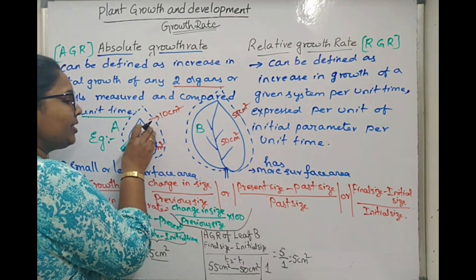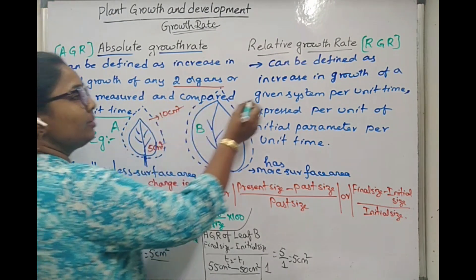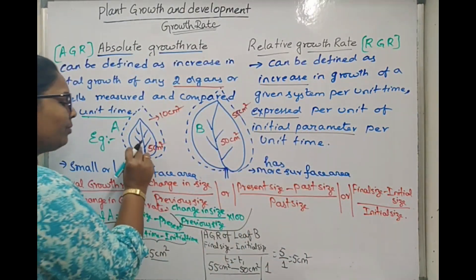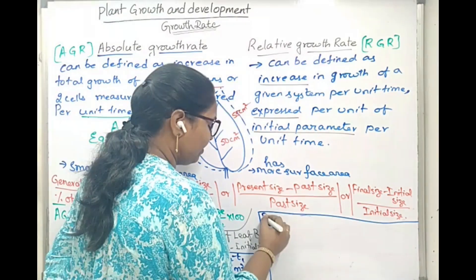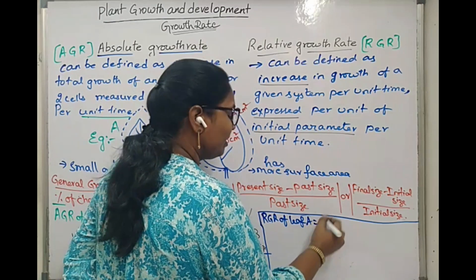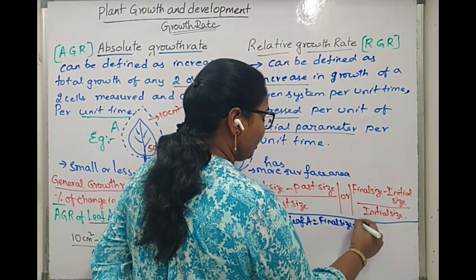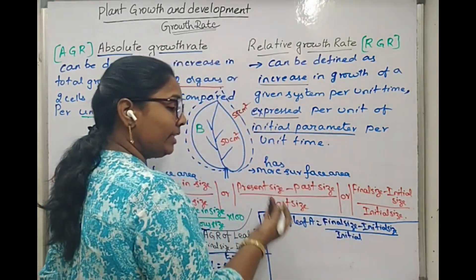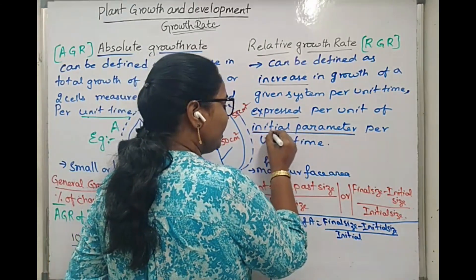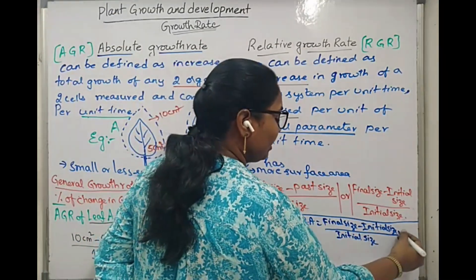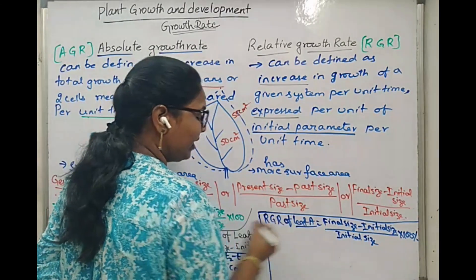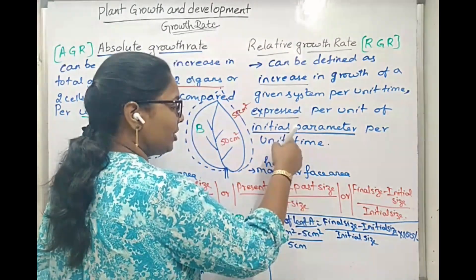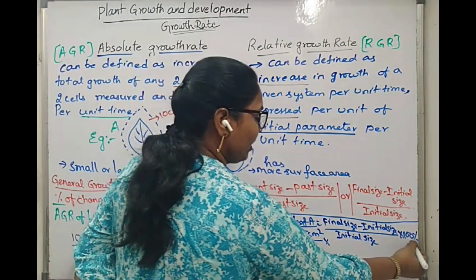But when we are calculating individually for each leaf, what is its growth rate? That is termed as increase in growth of a given system per unit time, expressed individually according to initial parameters. Now we will calculate the relative growth rate of leaf A and leaf B. For relative growth rate, the equation is final size minus initial size divided by initial size — because we consider the initial parameter. In percentage terms, we multiply by 100.